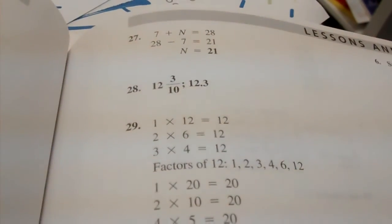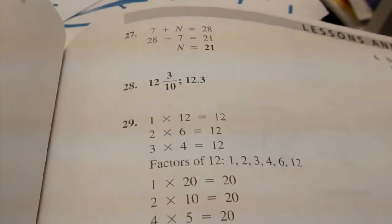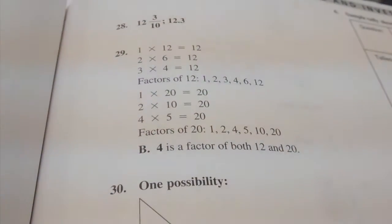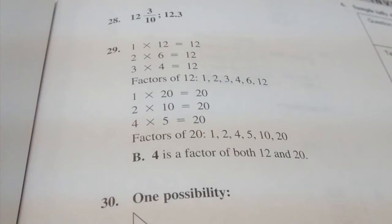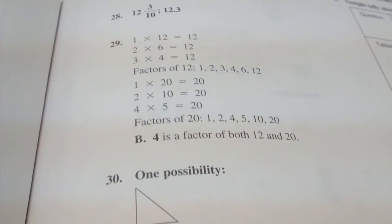Number 28, 12 and 3 tenths and 12.3. Number 29, B, 4 is the factor of both 12 and 20.